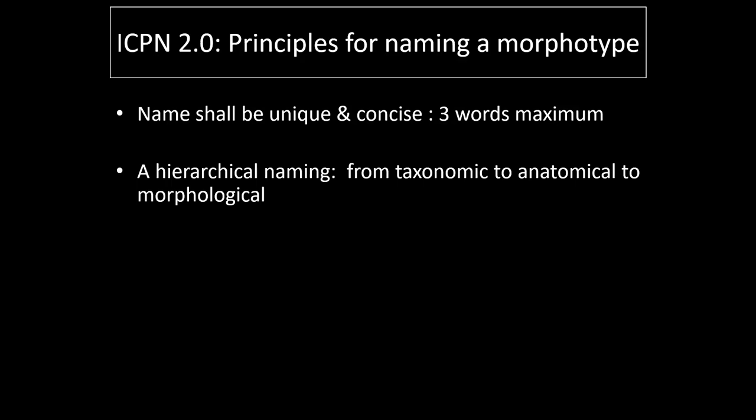There is a kind of hierarchy in the names: we go from taxonomical names to anatomical names to morphological names. We use a taxonomical name when the morphotype can without any doubt be attributed to a plant taxon. We use an anatomical name when we have absolutely no doubt about its origin in a plant organ or tissue. We use a morphological name when the morphotype morphology cannot be attributed to a unique plant taxon or a unique plant organ or tissue.